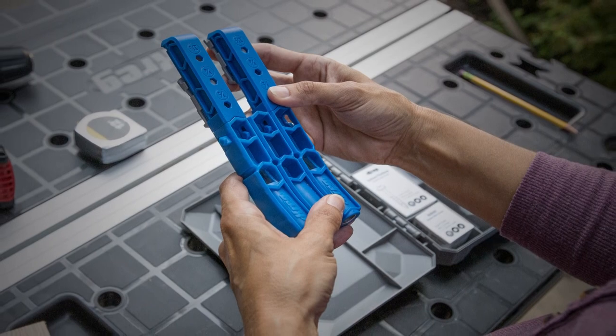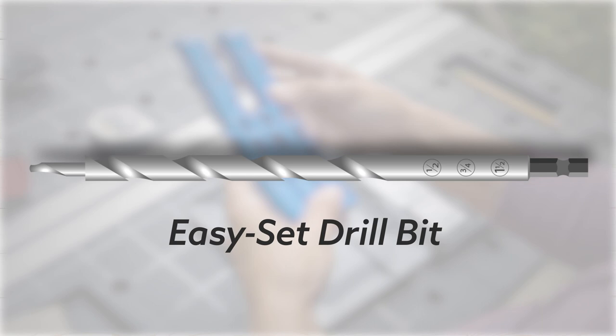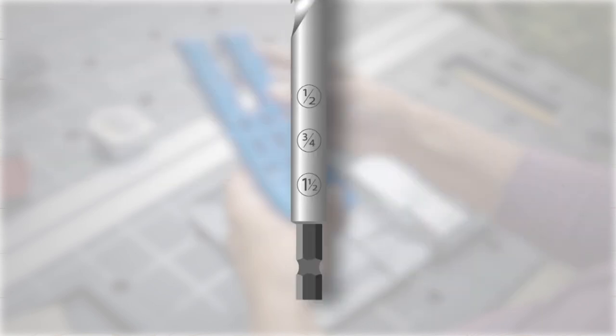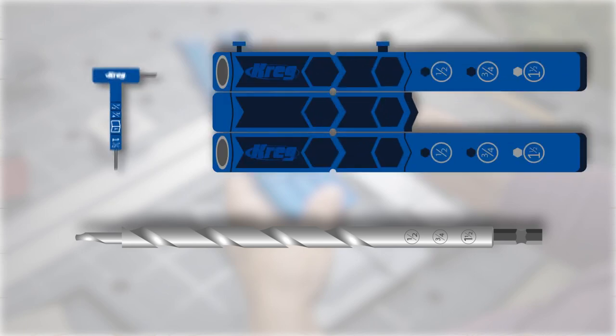With Kreg 300 series pocket hole jigs, setting up the bit is easy. In fact, we call it Easy-Set. The bit has three numbers engraved on it that match the half-inch, three-quarter-inch, and inch-and-a-half thickness ranges on the jig body and material thickness gauge.